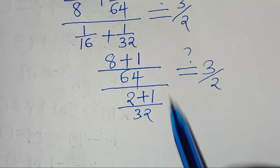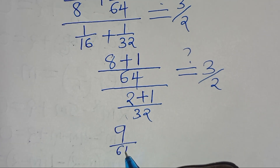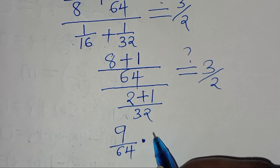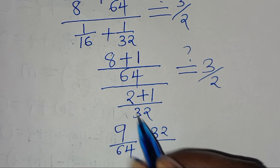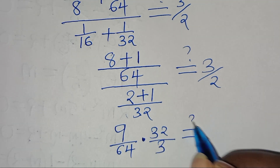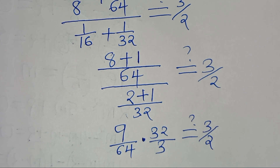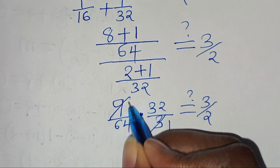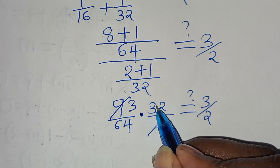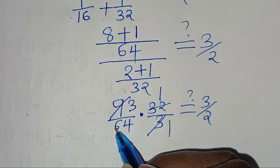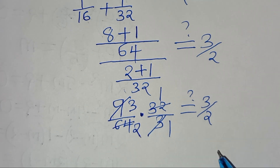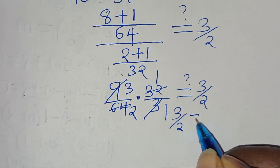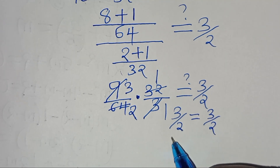So in the numerator we have 9 over 64. Multiplying by the reciprocal of the denominator, 32 over 3. Simplifying: 9 divided by 3 is 3, and 64 divided by 32 is 2. So we have 3 over 2 on the left hand side equal to 3 over 2 on the right side.